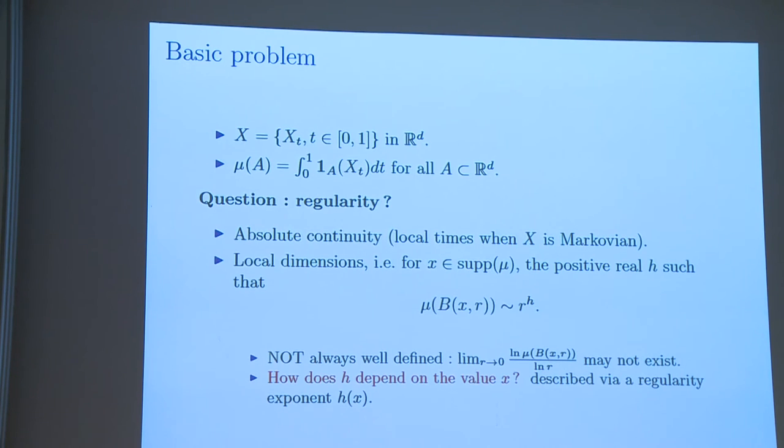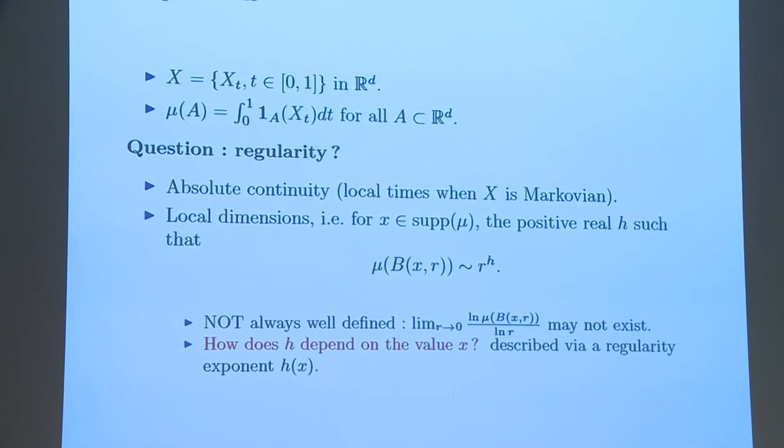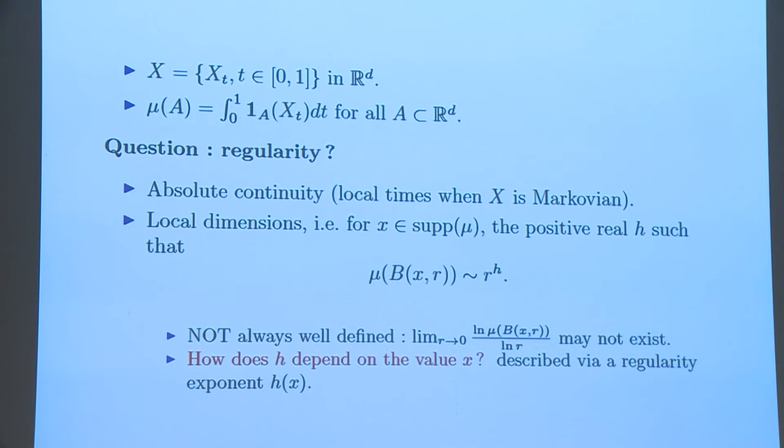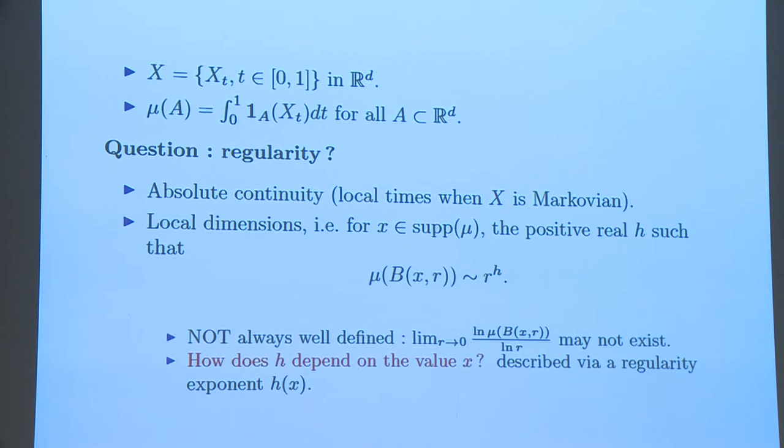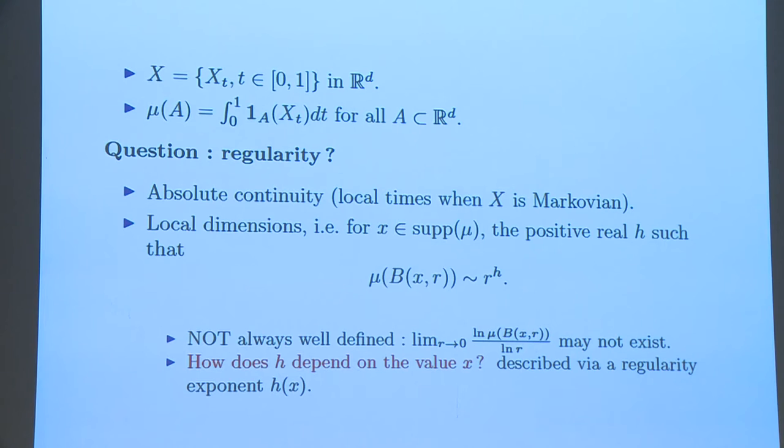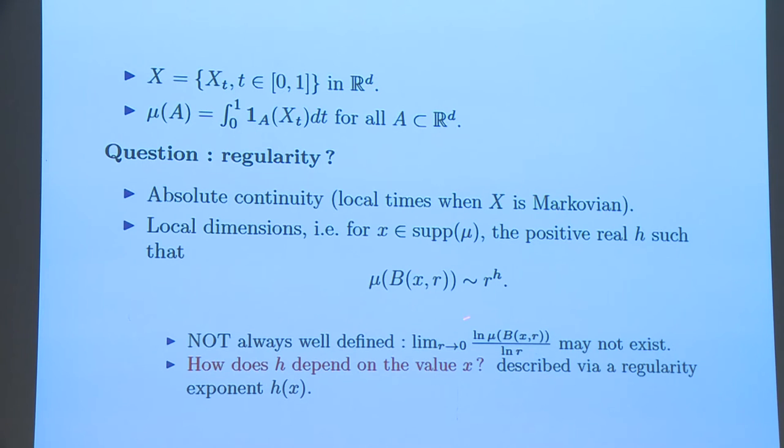First, the most basic question is the absolute continuity of this measure. In some other terminology, it is also called occupation densities. In the Markovian context, it is often called local times. When the local time does not exist, we can consider another kind of regularity properties for these measures. It is called local dimensions. For this measure, we consider a point in the support of this measure. We want to observe some kind of power law for the occupation measure of ball centered at this point, X. It is simply the positive real number H, such that we have this relation.